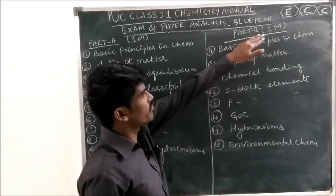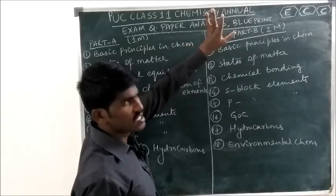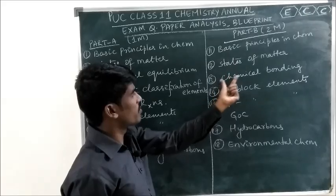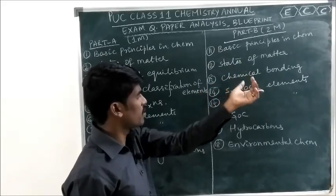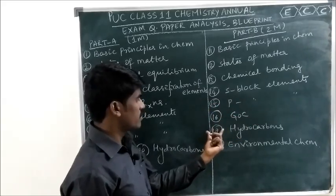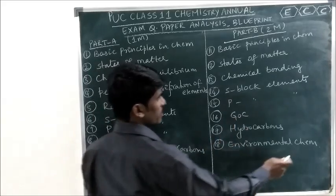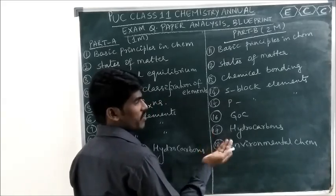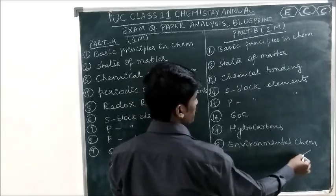Part B — 2-mark questions by chapter: Question 11 is from Basic Principles in Chemistry. Question 12 is from States of Matter. Question 13 is from Chemical Bonding. Question 14 is from S-Block Elements. Question 15 is from P-Block Elements. Question 16 is from General Organic Chemistry. Question 17 is from Hydrocarbons. Question 18 is from Environmental Chemistry — sometimes they may ask Environmental Chemistry for 1-mark too, but that is very rare; most cases it is for 2 marks.